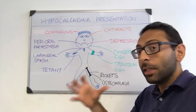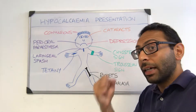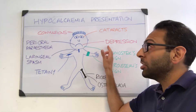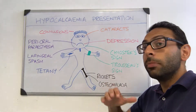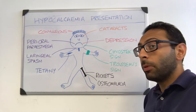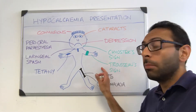Tetany — basically contraction of the muscles — can happen with a low calcium level. Depression and low mood can happen, particularly in a more chronic stage of hypocalcemia. There are a couple of key signs to remember.